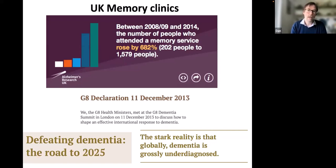Back in 2013, the G8 ministers with David Cameron, who was the prime minister, had this declaration to say that they want to defeat dementia by 2025 or have some disease-modifying treatment. But they also made this point that the stark reality is that globally, dementia is grossly underdiagnosed. And in the UK, they looked at what's called the dementia gap. They estimated that 50% of people in the UK didn't receive a diagnosis in lifetime.